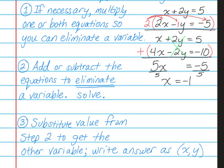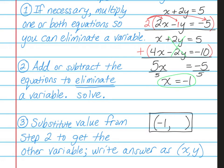Step 3 is to substitute the value you got from step 2 into one of the original equations in order to get the other variable, then write your answer as an (x, y) ordered pair. We got x is equal to negative 1. I'm going to plug it back into one of the original equations.